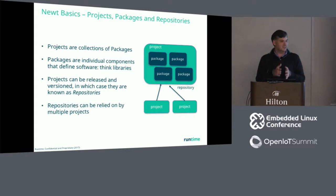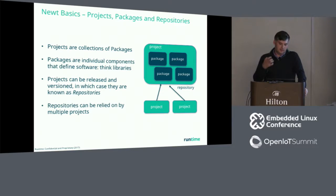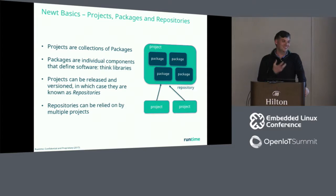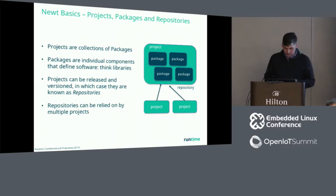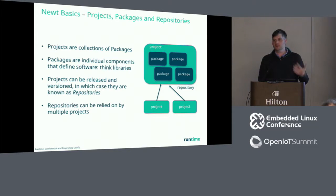To recap: projects are collections of packages; a versioned collection of packages is a repository. The reason we decided on this hierarchy instead of just individual package dependencies — if you look at Node Package Manager and JavaScript, you see ten-line packages being redistributed, and we didn't think that was a particularly good model for embedded. You want a collection of packages and libraries that you test and version together. So we made the redistributable component be slightly larger. Newt has built-in ability to install a remote project, pin it to a specific version or git branch, rely upon it, upgrade, and downgrade.